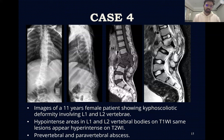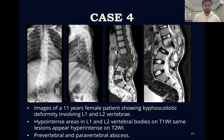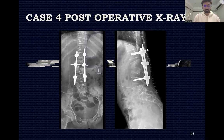Case four: Images of a female patient showing kyphoscoliotic deformity involving L1 and L2 vertebral bodies. Hypointense signal in L1 and L2 vertebral bodies on T1-weighted images, with the same lesions appearing hyperintense on T2-weighted images. Pre-vertebral and para-vertebral abscesses are noted. Post-operative X-rays of the same patient are also shown.